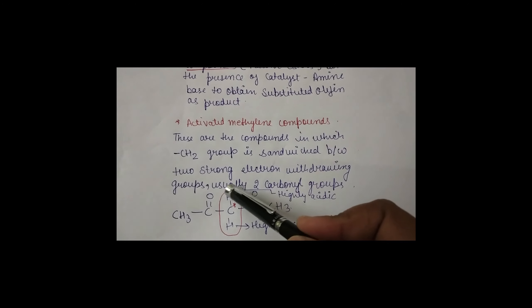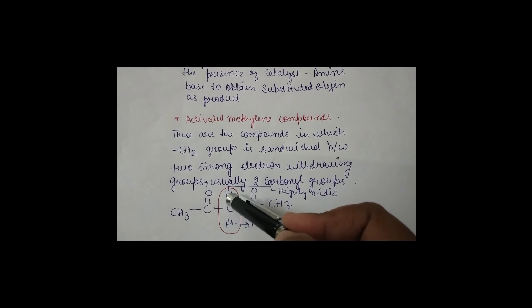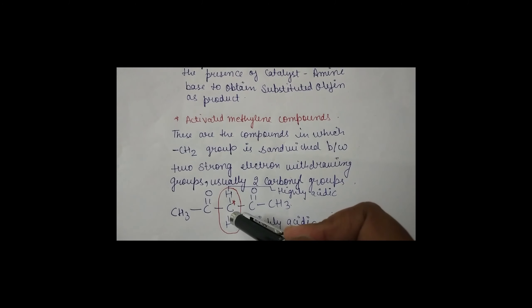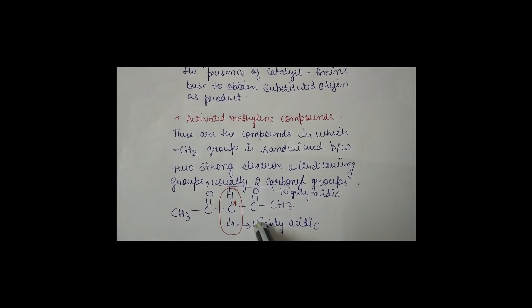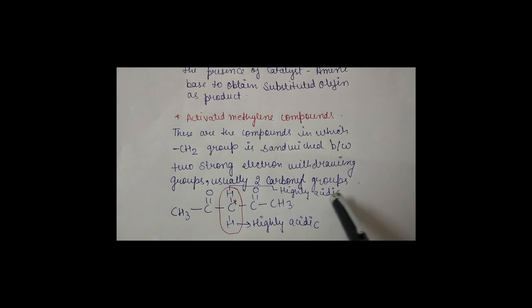The carbon which is present between two strong electron withdrawing groups such as carbonyl carbon is called an activated methylene compound. The hydrogens present on this carbon are highly acidic in nature, meaning they can be easily donated to other compounds, because acids are compounds which can easily liberate H⁺ or a proton.